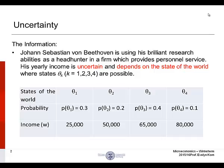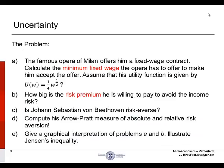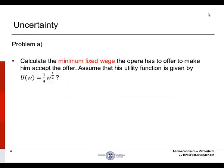I want to bring your attention to the word uncertain. Whenever you see uncertainty or uncertain, you can understand that it is highly likely that probability will be involved. The problem is divided into five parts. We'll start with part A. The famous opera of Milan offers him a fixed wage contract. Calculate the minimum fixed wage the opera has to offer to make him accept the offer. Assume that his utility function is given by U(W) equals W raised to the power of one-half times one-fourth.